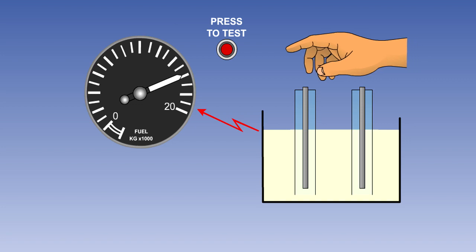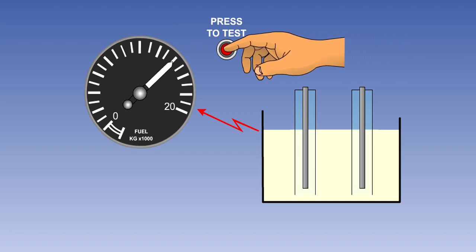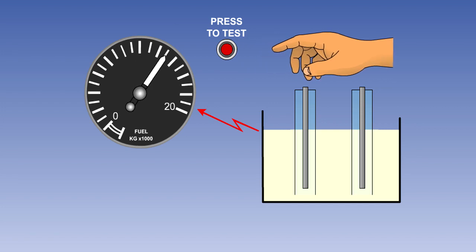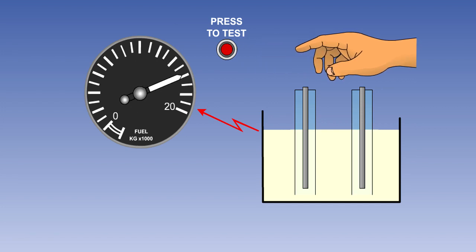Some systems also incorporate a test switch, utilizing the fail-safe circuit. When the test switch is operated, the indication moves towards empty, and when the switch is released, the pointer should move back to its original position.